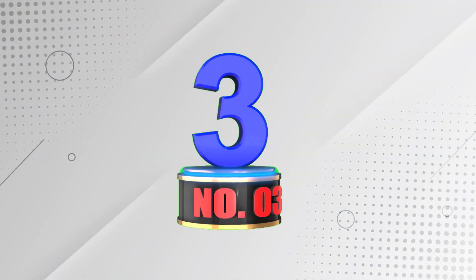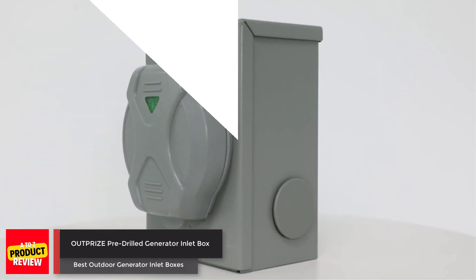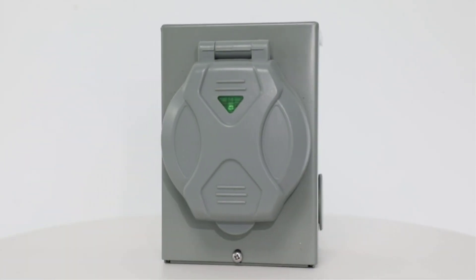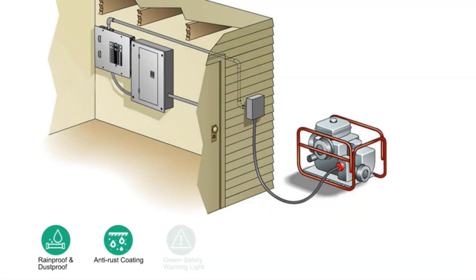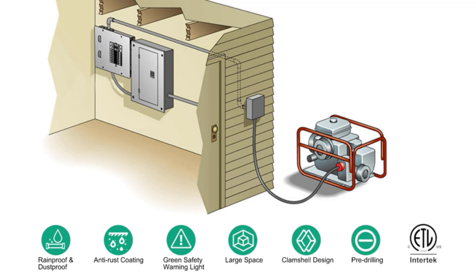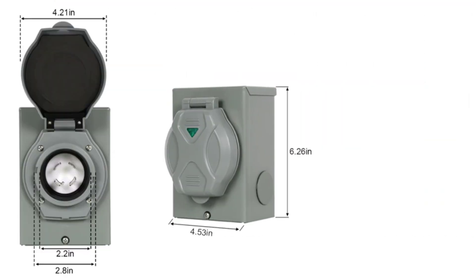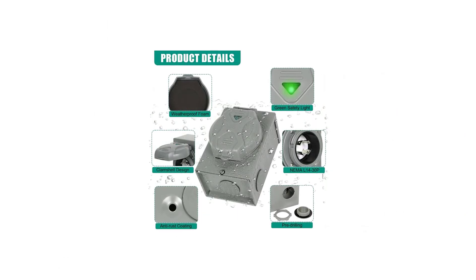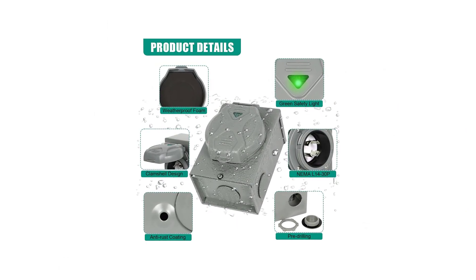Number 3. The Outprise Inlet Box is a durable and weatherproof power inlet box designed for outdoor use. Made with durable steel construction and an anti-rust coating, it provides robust protection against wind, rain, and rust.